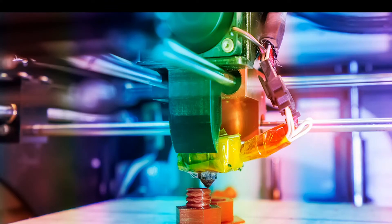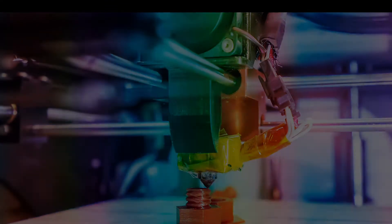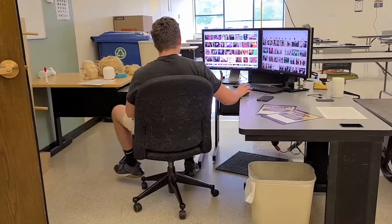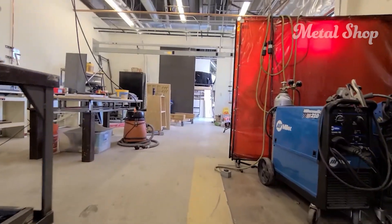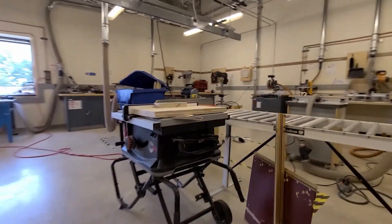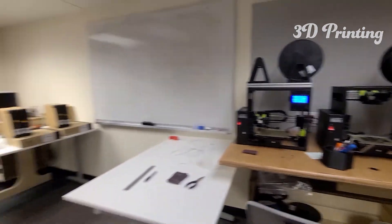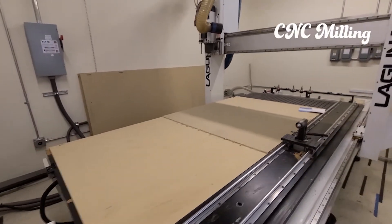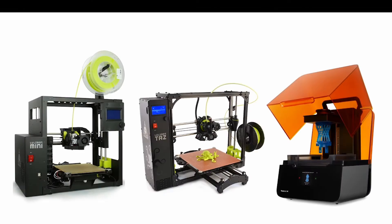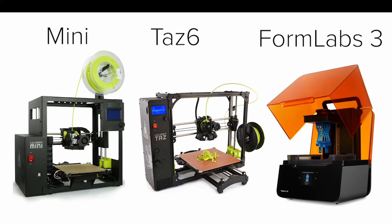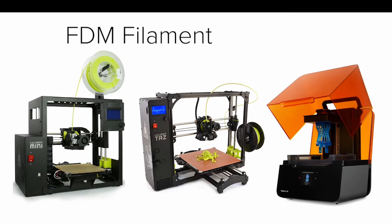Hey everyone, today we're going to be talking about 3D printing and the best ways to prepare your file for that. The three types of 3D printers we offer are the LulzBot Mini, the LulzBot TAS-6, and the FormsLab 3 resin printer. Both LulzBots are FDM filament printers and the FormsLab 3 is an SLA resin printer.